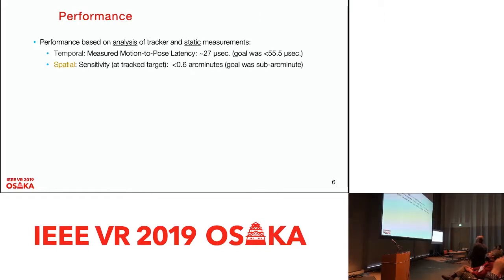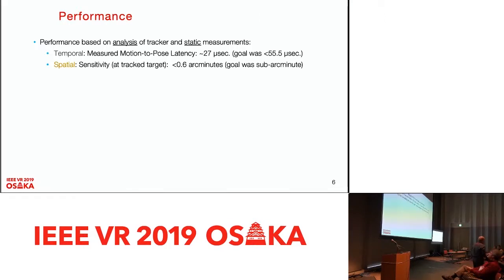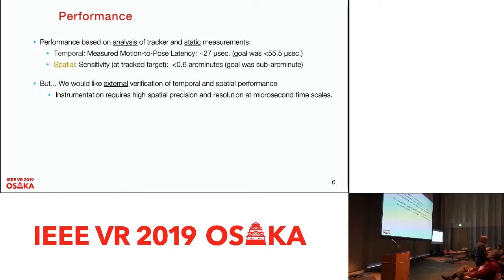Measuring the static performance is really easy because you can just see what comes out. On the bench, if you move it one arc minute, it will tell you you've moved it one arc minute. The trick is how do you measure this at speed? We were stumped by this — we thought we would need another instrument that was faster and more sensitive than this. The answer came during one meeting.